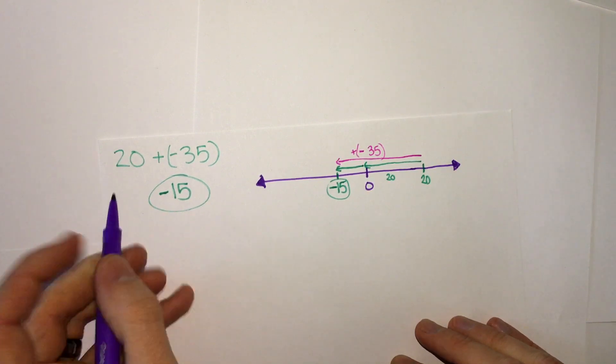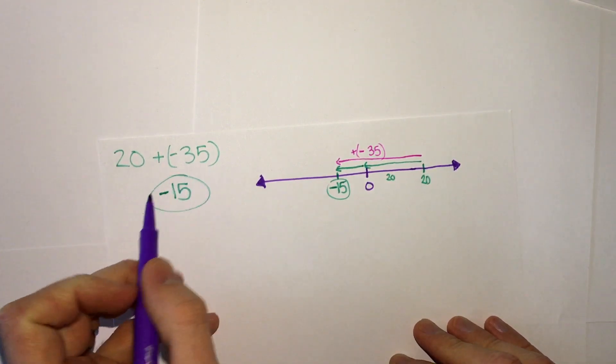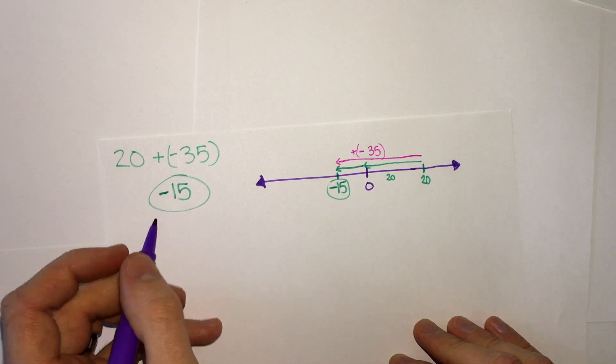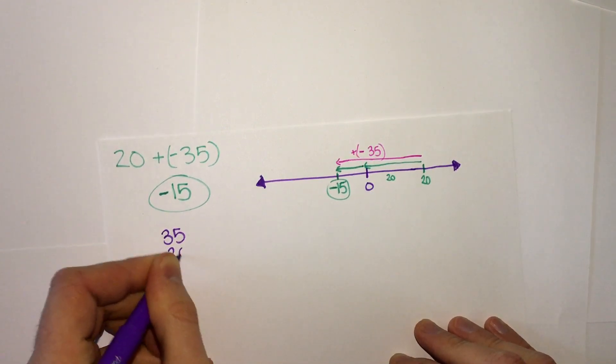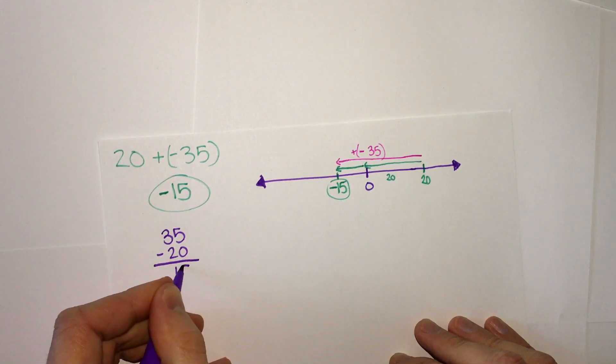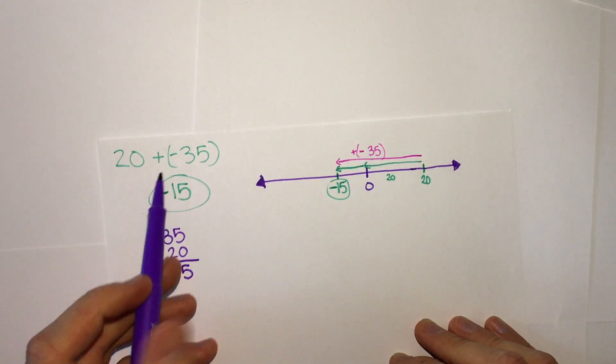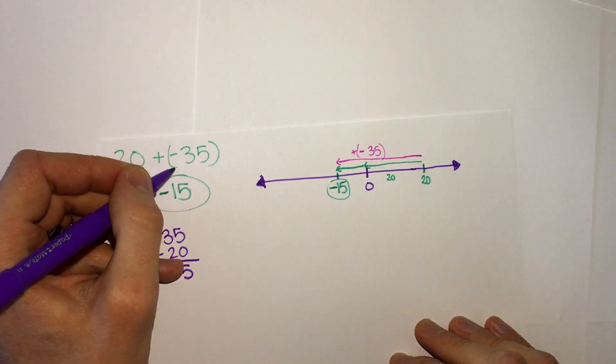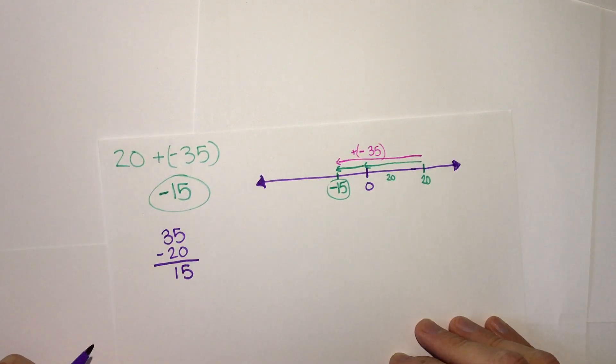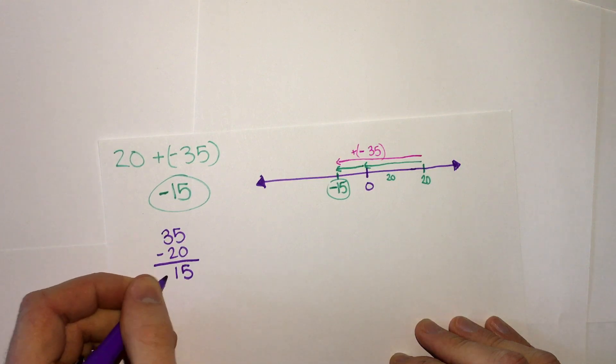So when we see that we have one positive and one negative number for addition, what we should always do is subtract the bigger number minus the smaller number, and we can figure out the sign by which number is bigger. Here the bigger number is negative 35, that's negative, so our answer becomes negative.